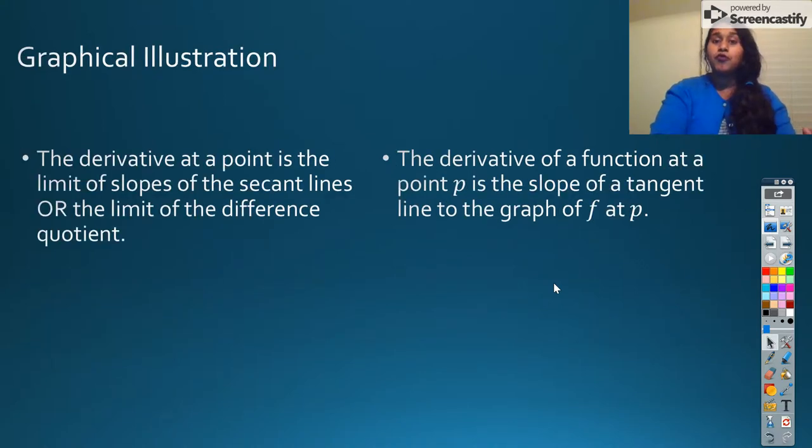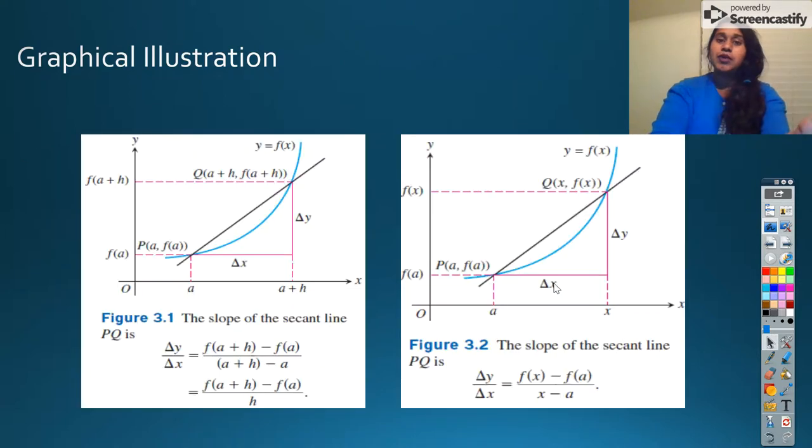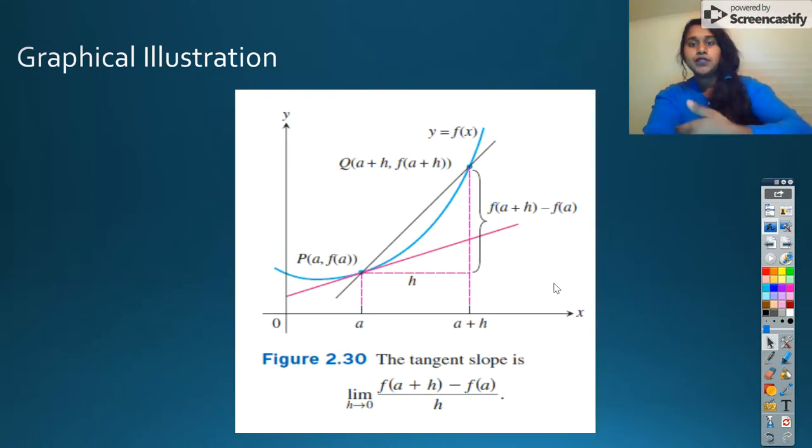But today, we're going to move forward past that with some information about our slope from the secant lines. We transform that into a limit approaching our tangent slope. And using this, you can actually calculate instantaneous rate of change.